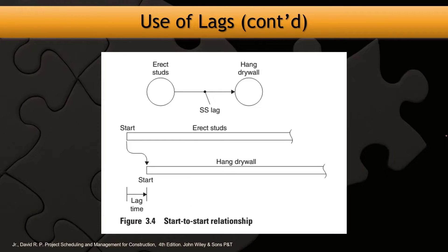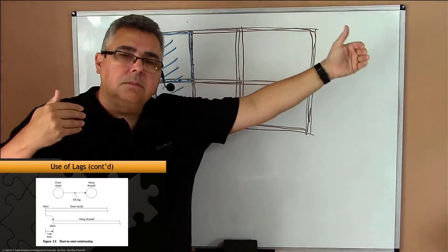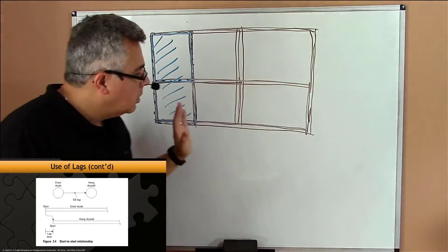Like, say if the worker finishes the frame in one floor or in one room, you can put the guys to hang the drywall. Once you finish a certain segment or certain part of the construction, you can start hanging the drywall.